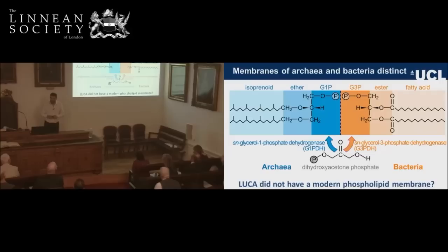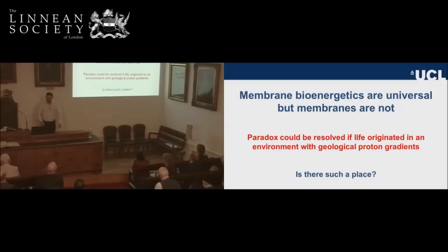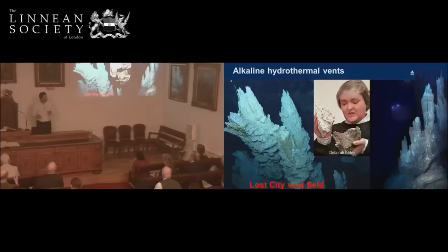This really is a major difference between those two groups. It implies that the common ancestor did not have these glycerol phosphate head groups at all — it certainly had a membrane, but not one like a modern bacterial or archaeal membrane. So here's the paradox: membrane bioenergetics seem to be universal, but the membranes themselves are not. The most interesting way to resolve this is that life originated in an environment where there were geologically sustained proton gradients.